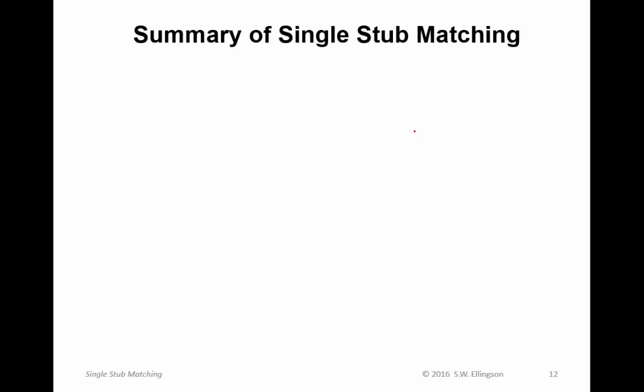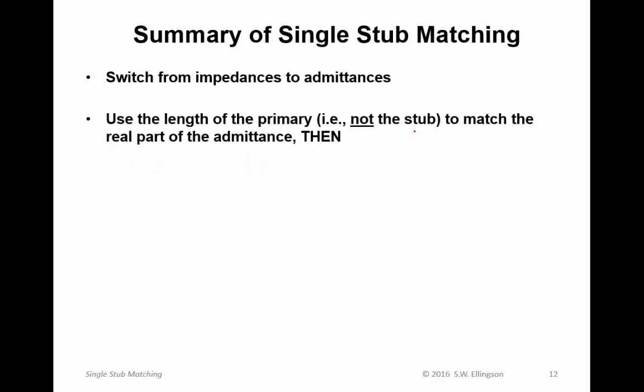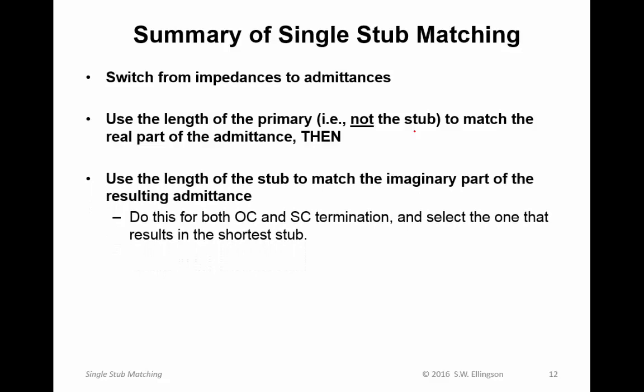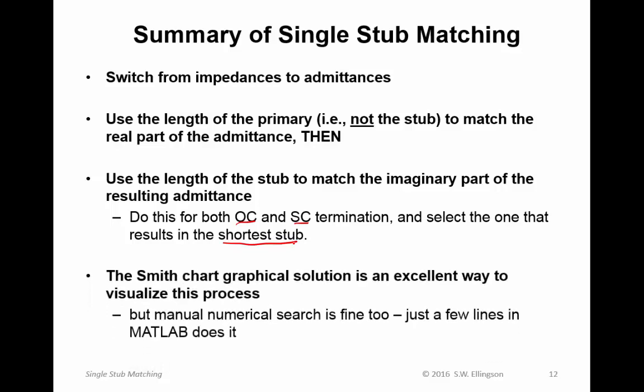Here's a summary of single stub matching. The procedure goes like this. You switch from impedances to admittances. You use the length of the primary line, not the stub. That's a common error. You first use the length of the primary line to match the real part of the admittance. And then you use the length of the stub to match the imaginary part of the resulting admittance. You do this twice. Once for an open-circuited termination and once for short-circuited termination. And you select the one that results in the shortest stub. Because you almost always want the most compact possible device. The Smith chart graphical solution is an excellent way to visualize this process, and you can work the whole problem using Smith charts. But a manual numerical search is fine, too. I gave you the equation to do that. It's quite simple to do this in just a few lines of MATLAB. This concludes this lecture on Single Stub Matching.